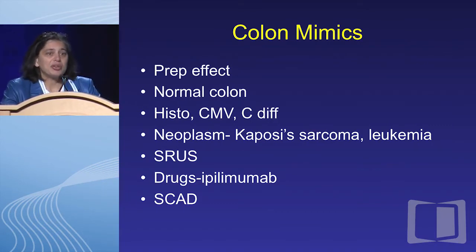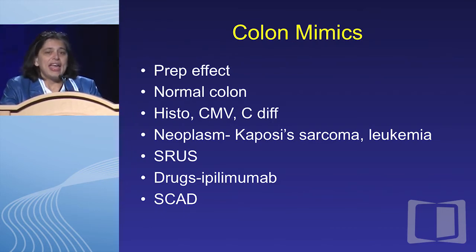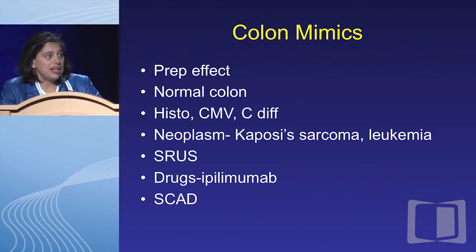Moving down into the colon, mimickers of IBD include the normal colon — when the patient has diarrhea and the pathologist says nonspecific chronic inflammation but crypt architecture is not distorted, there's plenty of mucin, and no basal cell plasmacytosis, that's normal. The prep can affect histology and an expert pathologist will tell you that's prep effect, not true inflammation. Top infections to think about: histoplasmosis, CMV, and C. diff. For neoplasms, Kaposi's sarcoma is less common now with antiretroviral therapies, but sarcoma can look like ugly Crohn's, and leukemic infiltrate can look like ulcerative colitis.